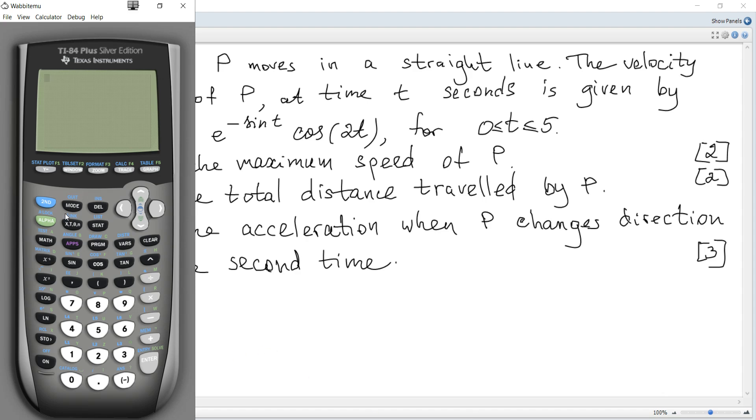Using a graph, first of all, there must be radian mode. Let's consider this function which is e to the negative sine t multiplied by cosine of 2t, and set the window from x equals zero to five and y from negative three to three.